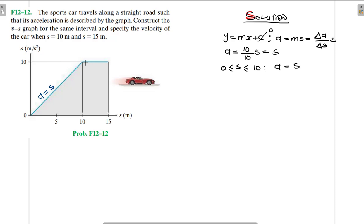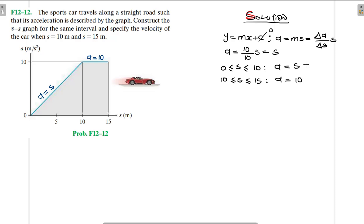Let's also find the equation from 10 to 15 meters. This straight line here — the acceleration is just constant. It's not changing; it is 10 meters per second squared. This is constant over the period from 10 meters to 15 meters. So in the interval 10 meters to 15 meters, acceleration is equal to 10 meters per second squared.